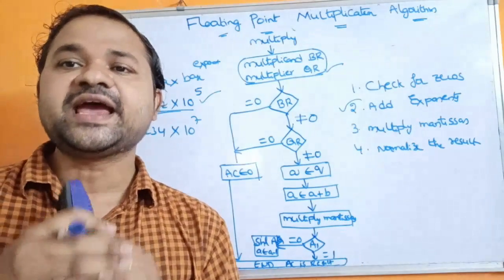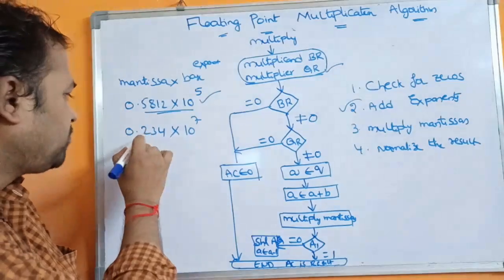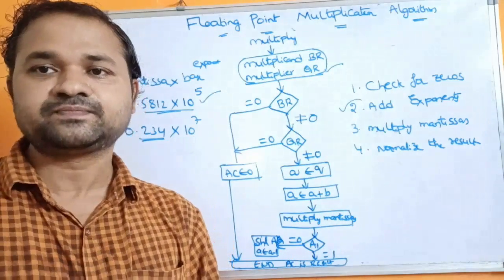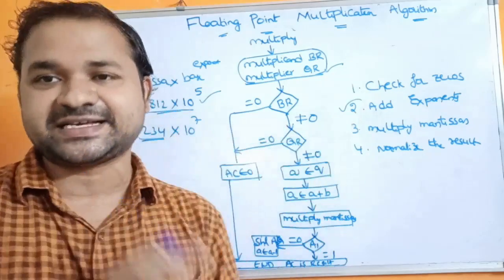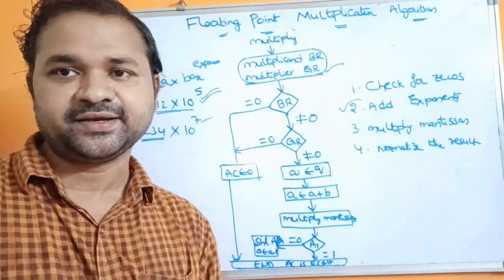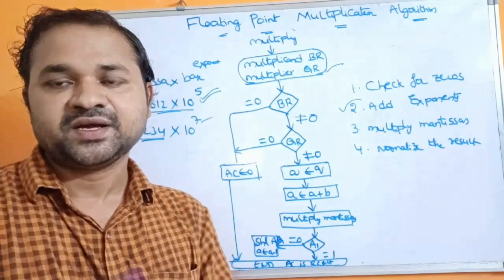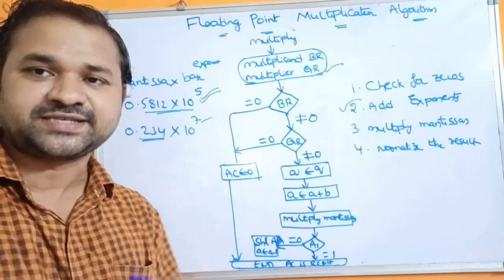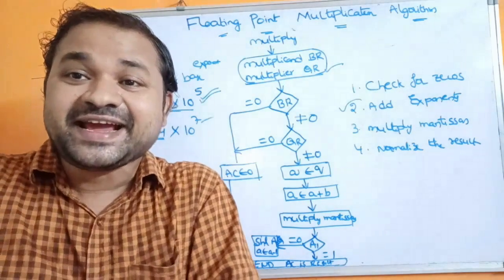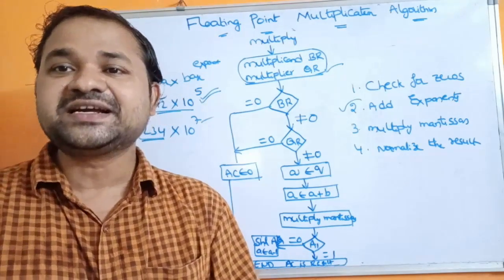The second step is to add the exponents. In addition or subtraction operations we must align the mantissas so that both exponents are equal, but in multiplication there is no need to align the mantissas — the exponents may be equal or different, it doesn't matter. In addition or subtraction the resultant exponent stays the same, but in multiplication we add the two exponents together.